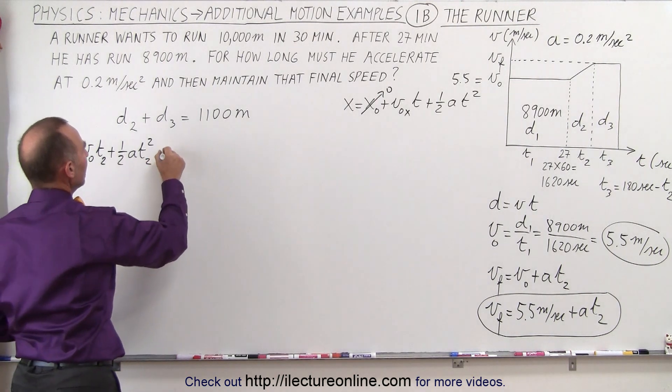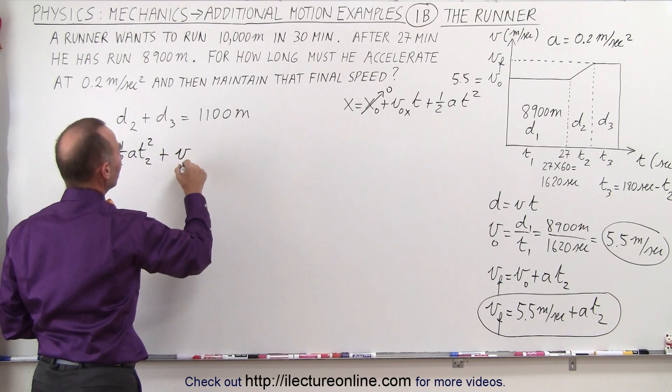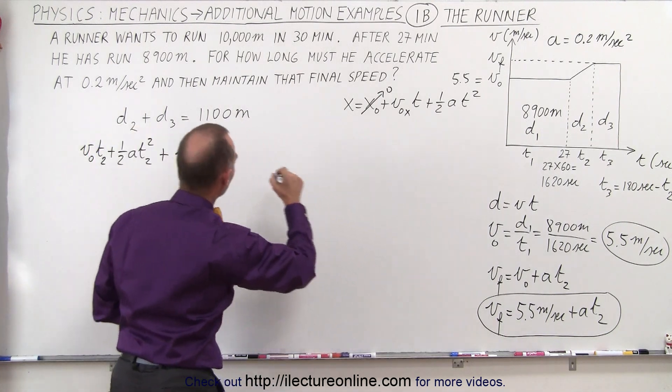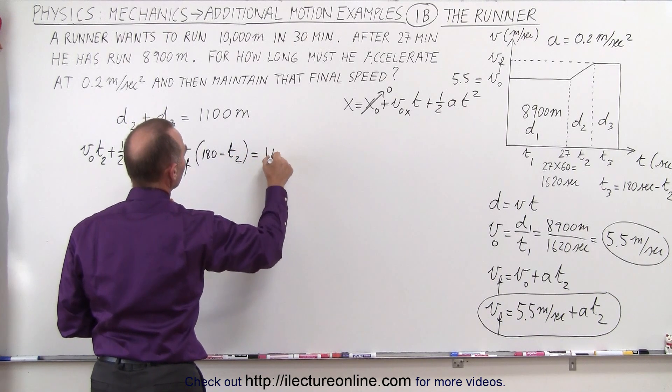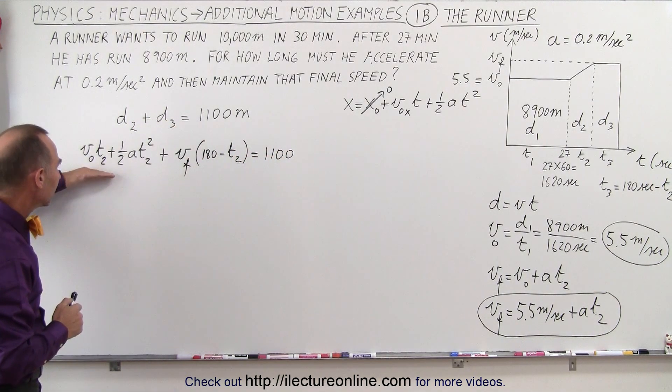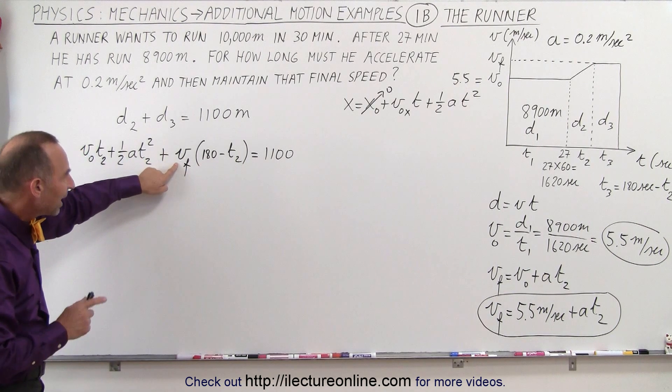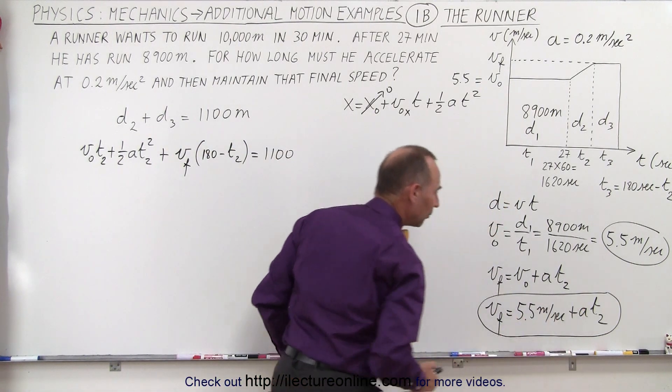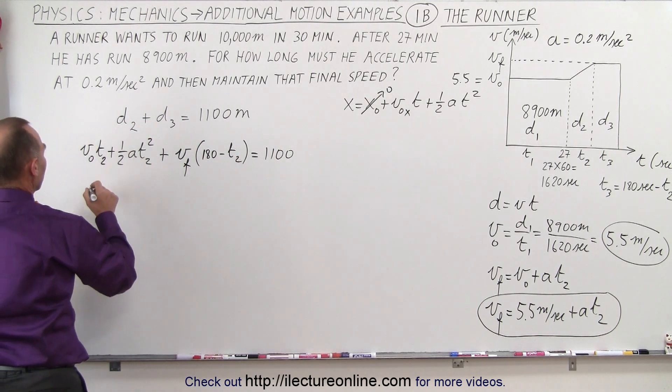Now distance 3, we're moving at a constant velocity. So that distance is simply velocity times time, but now that will be the final velocity times t3. And t3 can now be expressed in terms of 180 minus t2. And that should add up to 1100. Now when we take a look at this equation, we realize that we know the initial velocity. We don't know the time t2. That's an unknown. The acceleration is known. And the v final could be written in terms of the v initial plus the acceleration times time. So completely eliminating all variables except for time. So let's go ahead and do that.